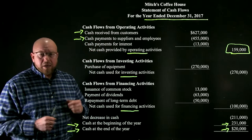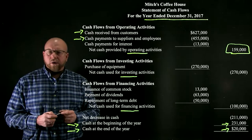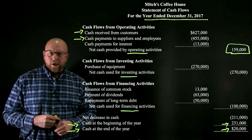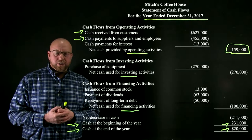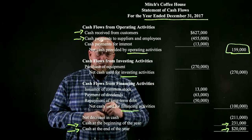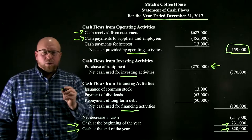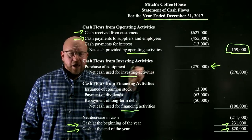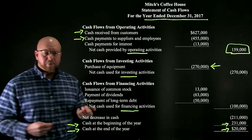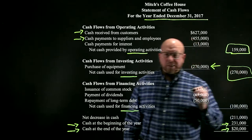Investing activities involve buying and selling long-term assets — specifically property, plant, and equipment. In this example, the company purchased equipment. For a coffeehouse, that might be a new oven, a new espresso machine, cash registers, or new furniture. The company spent $270,000 of cash — this is cash leaving the organization. It is possible to have positive investing cash flow if the company were selling old equipment, but for this particular year, investing cash flow is negative.